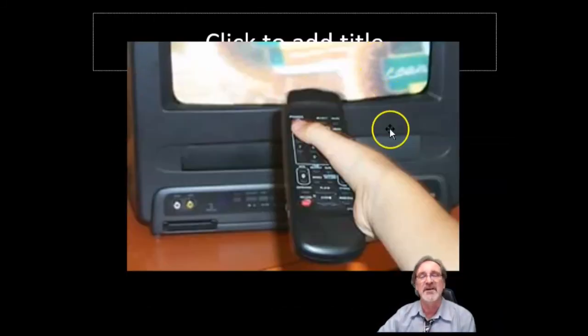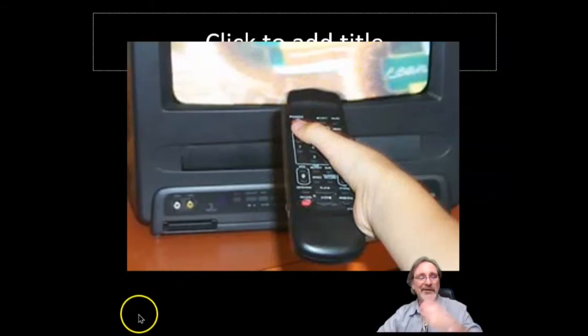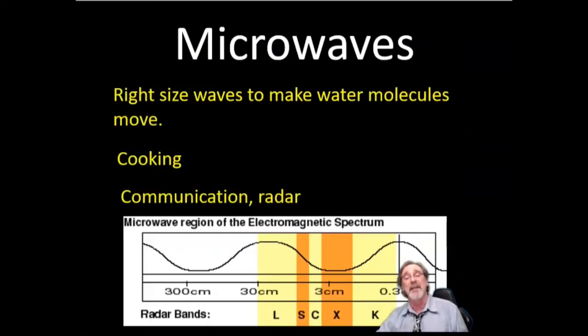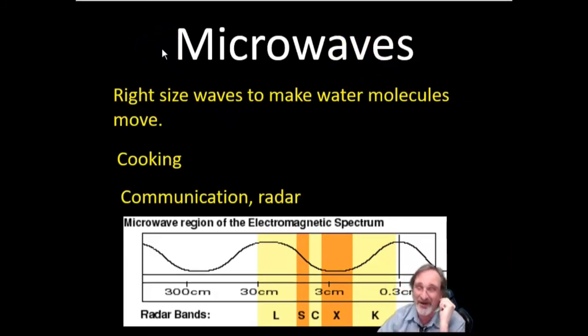Infrared is also used in remote controls and stuff like that. Now if you get longer than infrared, you get microwaves. Microwave, they call it that, but really it's bigger than visible. Don't let that fool you. And this is the right size waves to make water molecules move, which is how a microwave oven works. You get the microwave going into like a chicken leg or something like that, it heats up the water inside it so it cooks it from the inside up.